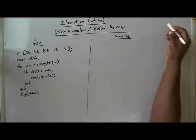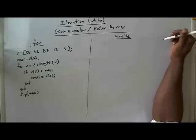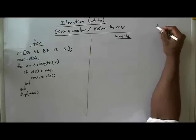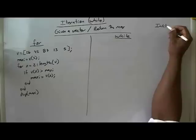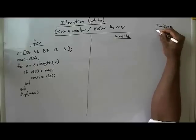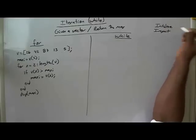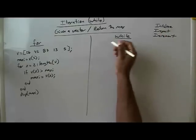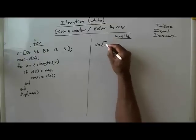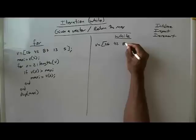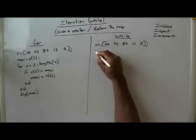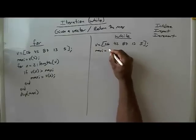Over here on the while loop side — and this is a good time to stop the video, give it a try, then start back up and see if you got what I got. Keep in mind we have to do the initializing, inspect the loop variable for a terminating condition, and increment the loop variable. So v equals 26, 42, 87, 13, 5, and maxi equals v1.